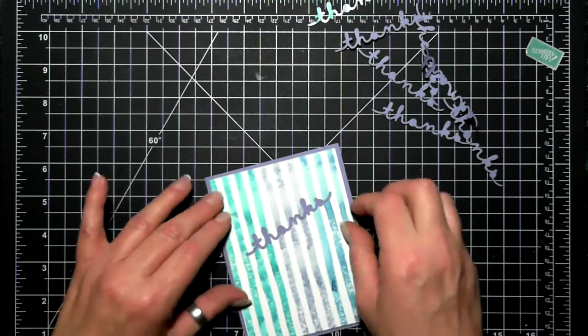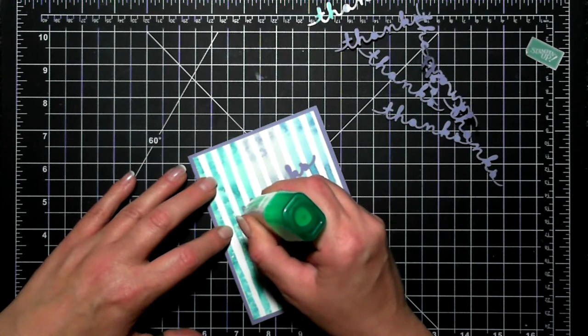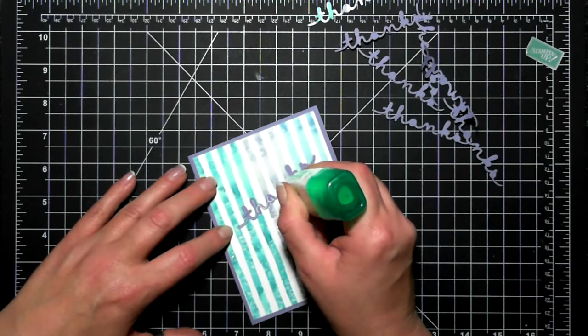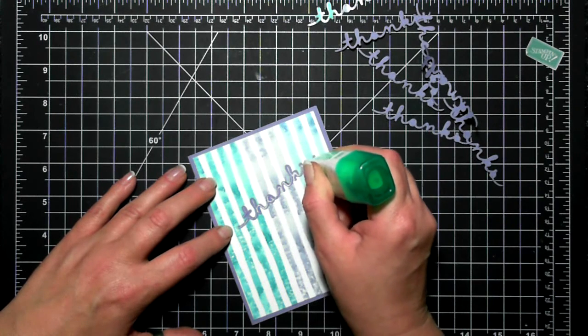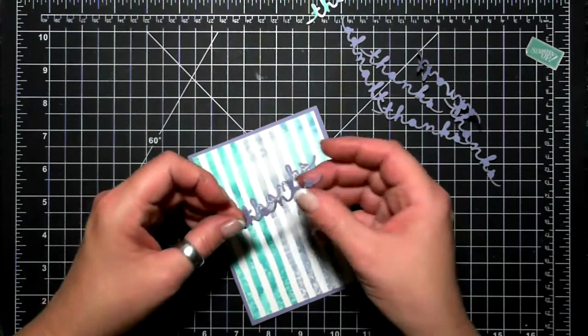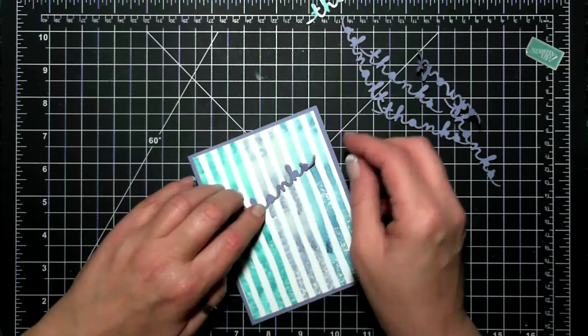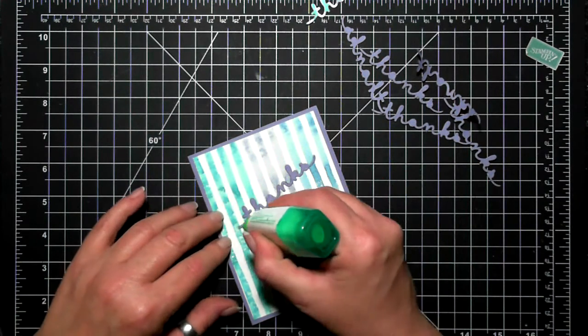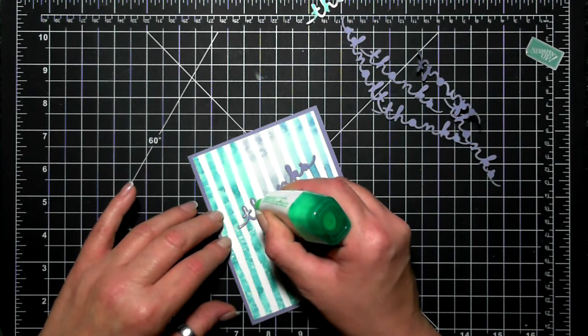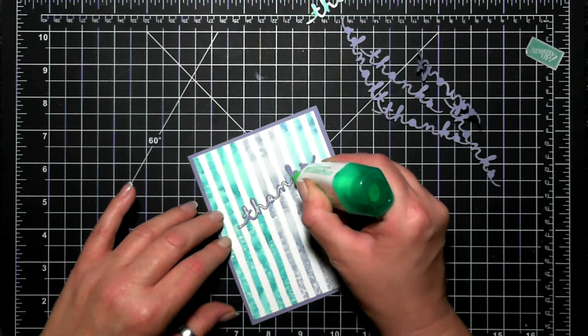Then with my Tombow I just basically wrote in 'thanks,' and my first wisteria wonder die cut piece goes directly in there so it's nice and flush. It was actually really easy to do this, like it didn't take much time at all. I'm doing this video in real time so it actually didn't take too long to get this to go in.